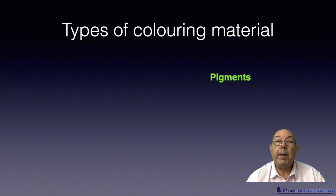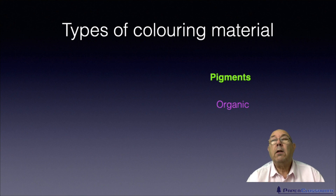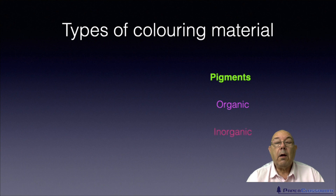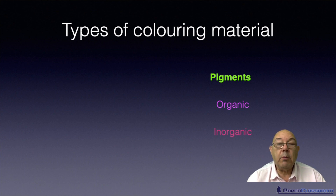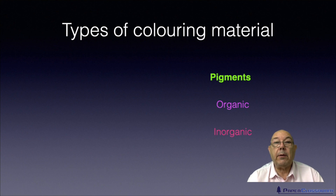There are two types. We've got pigments, and pigments themselves can either be organic — and usually that means man-made — or they can be inorganic. Inorganic pigments can be dug up out of the ground, things like iron oxide and ochre, or they too could be man-made materials.